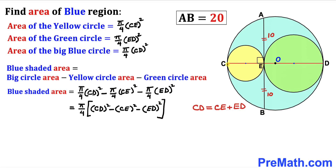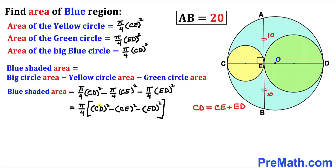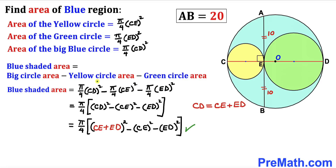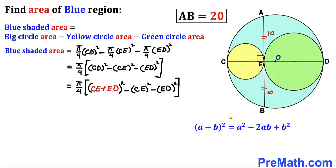Now let's observe that the whole diameter CD equals the sum of the individual diameters CE and ED. So I will replace CD with (CE + ED). In the next step I have replaced CD by CE + ED, then apply the identity (a + b)² = a² + 2ab + b², treating CE as a and ED as b.